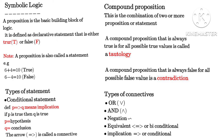The word 'proposition' is a basic building block of logic. It is defined as a declarative statement, in the sense that it can either be true or false. In real life situations we know it is either false or true, positive or negative. So '6 plus 4 equals 10' is a true statement, while '6 minus 4 equals 10' is a false statement. And we have types of statements.